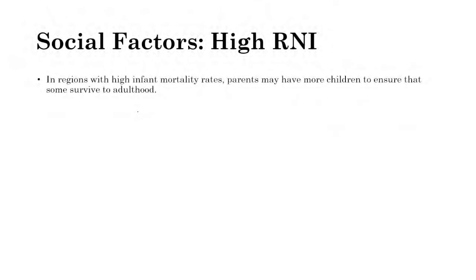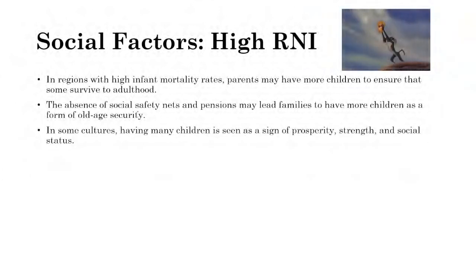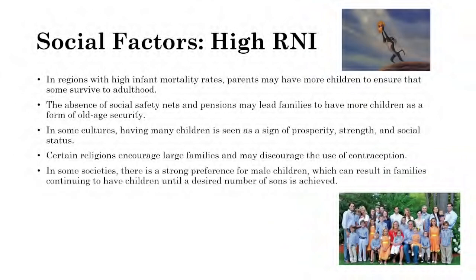Social factors impacting high population growth include: in regions with high infant mortality rates, parents have more children to ensure some survive to adulthood. The absence of social safety nets and pension systems — which typically develop in countries with the resources and tax bases to fund them — means families use children as old-age security. Some cultures view having many children as a sign of prosperity, strength, and social status. Certain religions encourage large families and may discourage contraception.